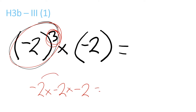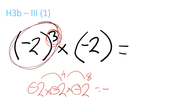Which equals: 2 times 2 is 4, 4 times 2 is 8. So it's 8. And there's a minus here — there's a minus and a minus. Since it's an odd number, the minus stays a minus. If it was 4 minuses, it would be a plus. So, it's minus 8.